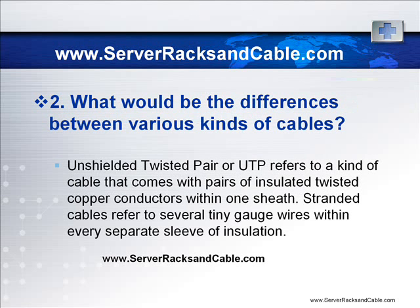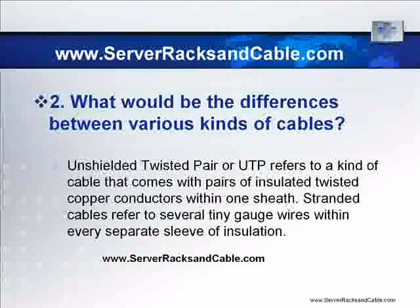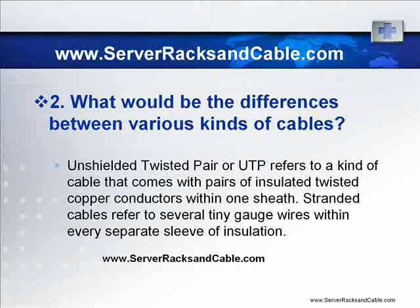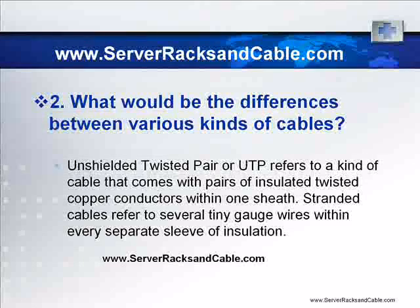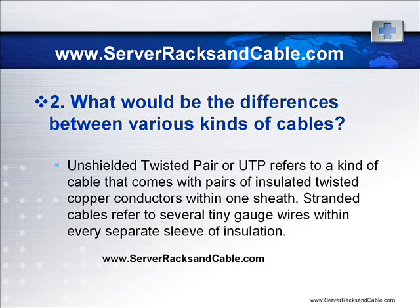What would be the differences between various kinds of cables? Unshielded twisted pair, or UTP, refers to a kind of cable that comes with pairs of insulated twisted copper conductors within one sheath. Cables of UTP are highly common when it comes to desktop communications, applications, and cabling. Stranded cables refer to several tiny gauge wires within every separate sleeve of insulation. Stranded cables happen to be more flexible, so they would be ideal for shorter distances, like patch cords. Solid cables have bigger gauge wires within every sleeve, and have improved electrical performance compared to stranded cables. They are traditionally used for inner walls, ceilings, and any kind of long cable runs.